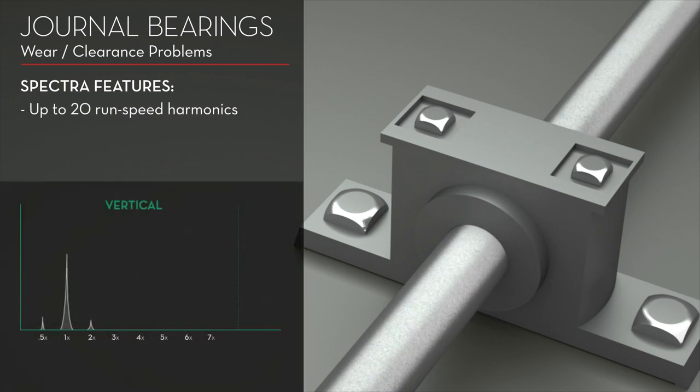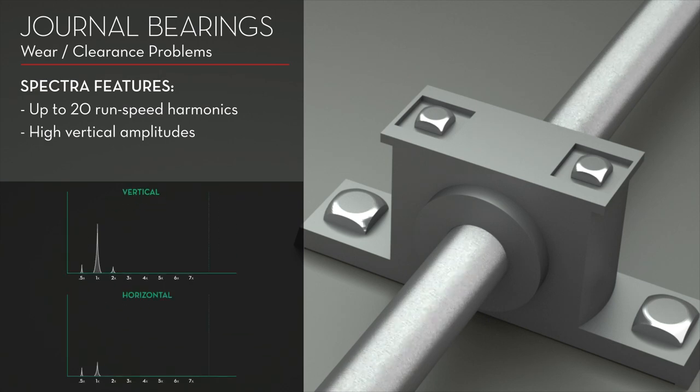Wiped journal bearings will often show high vertical amplitudes compared to horizontal, but may show only one pronounced peak at 1x.